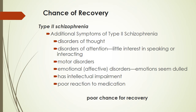Type 2 schizophrenia includes the usual symptoms plus disorders of thought, disorders of attention so they have little interest in interacting with others, motor disorders meaning problems with their physical body, emotional or affective disorders where emotions are very dulled, intellectual impairment — meaning a developmental disability — and a very poor reaction to medication. These are folks that are not going to have a good chance to live a normal life, and oftentimes are institutionalized by the family because they are really unable to care for themselves and need professional help.